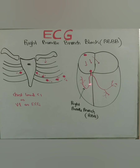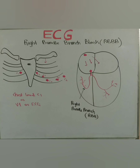The question arises: if there is a block in the right bundle branch, which of the 12 ECG leads will be most representative of that change? Because it's located on the anterior side of the heart wall, the chest leads — one or two of them — are going to be the ones which can represent this change most prominently.